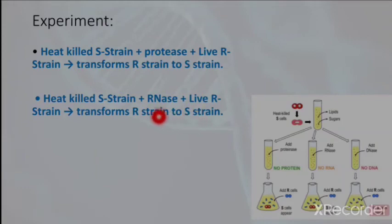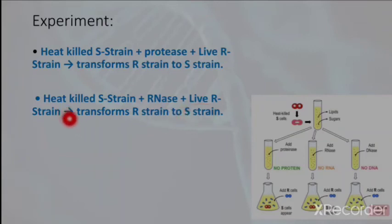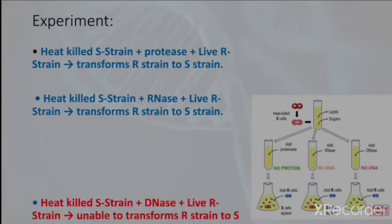Next, heat-killed S strain was taken and RNase was added. RNase is the enzyme responsible for the digestion of RNA. When it was injected along with live R strain, it was also able to transform the R strain to S strain.